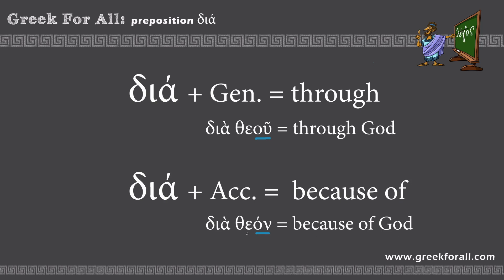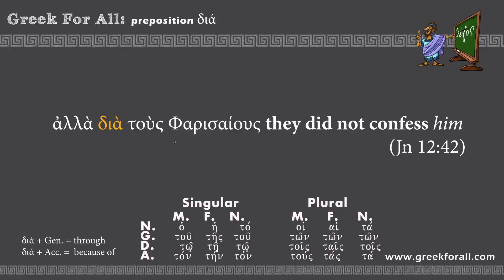Now let's take a look at some examples from the Bible. For educational purposes I've placed the lesson material here, including a paradigm for the definite articles showing how they change through the cases for masculine, feminine, and neuter genders. This paradigm is very helpful because the endings of the definite articles pretty much match those of adjectives and nouns.